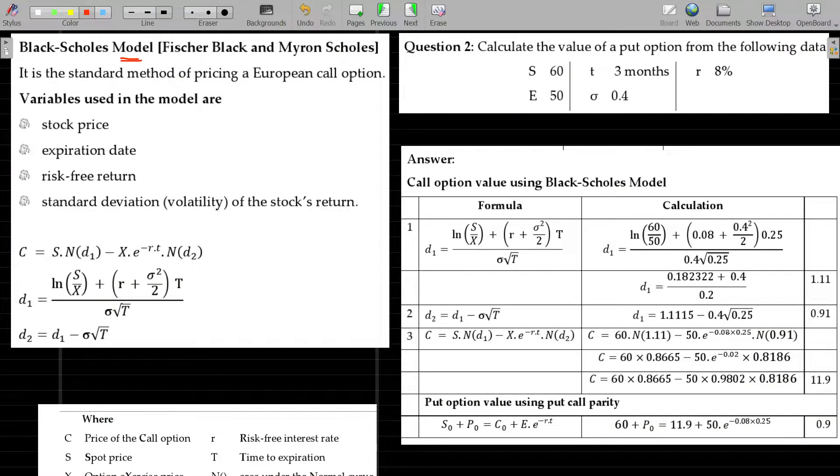The Black-Scholes model, propounded by Fischer Black and Myron Scholes, is a standard method of pricing for a European call option. European call option valuation in the Black-Scholes model.